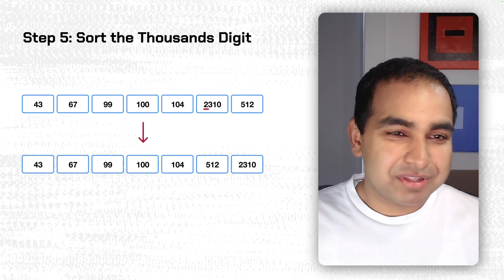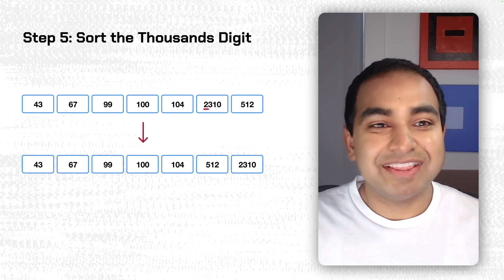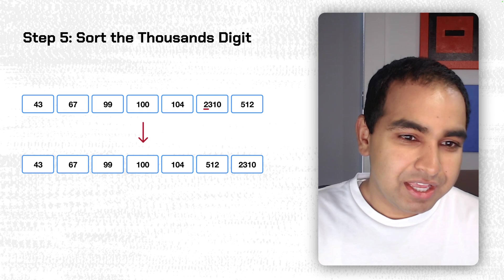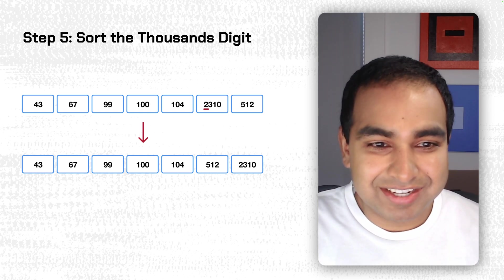And the last step is, of course, because the largest number is 2310, and there are four digits to it, we also have a thousands digit that we need to sort by. And in this case, the only number with the thousands digit is 2310, and its value is two.